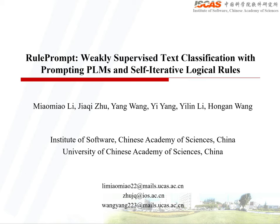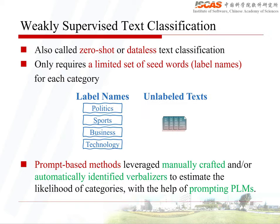Hello everyone, welcome to the video for RooPrompt. The problem we are addressing is weakly supervised text classification, also called zero-shot or data-less text classification, which only requires a limited set of seed words or label names for each category.